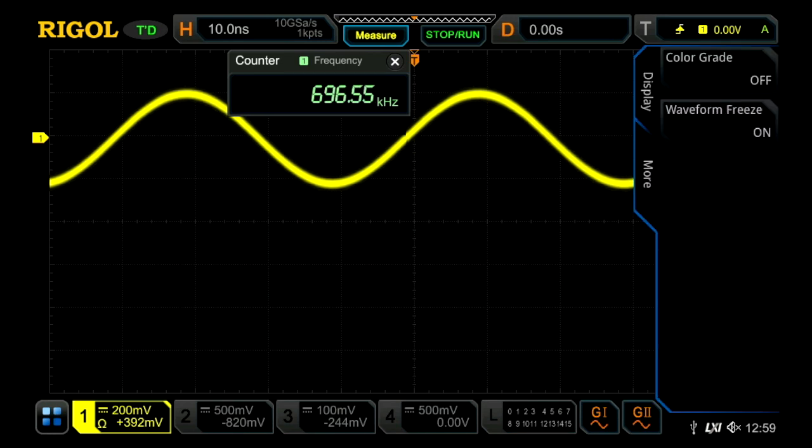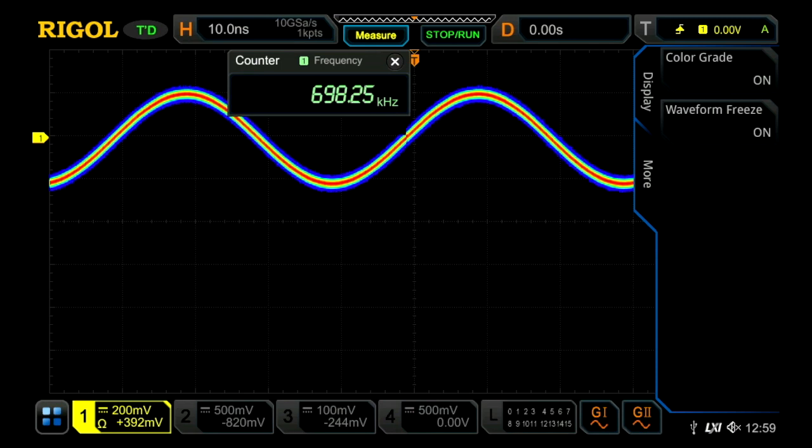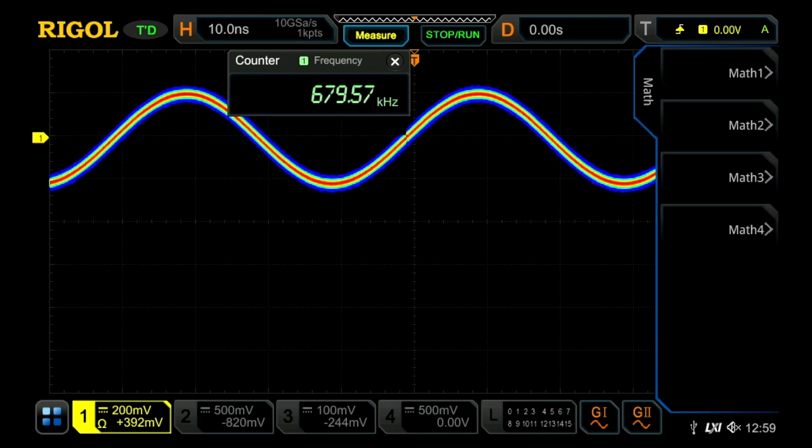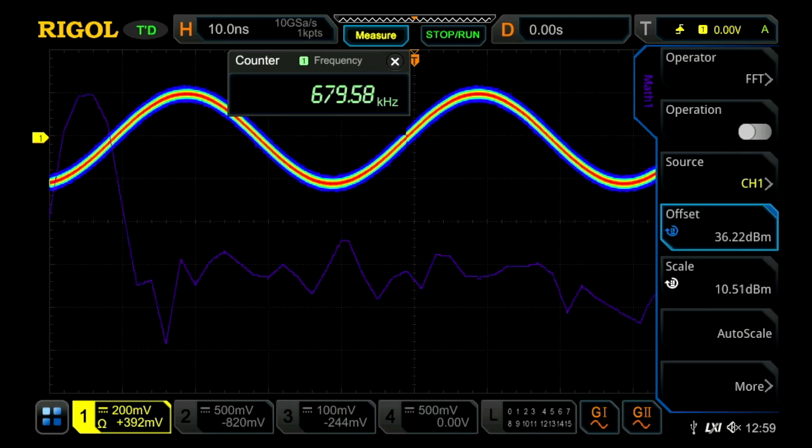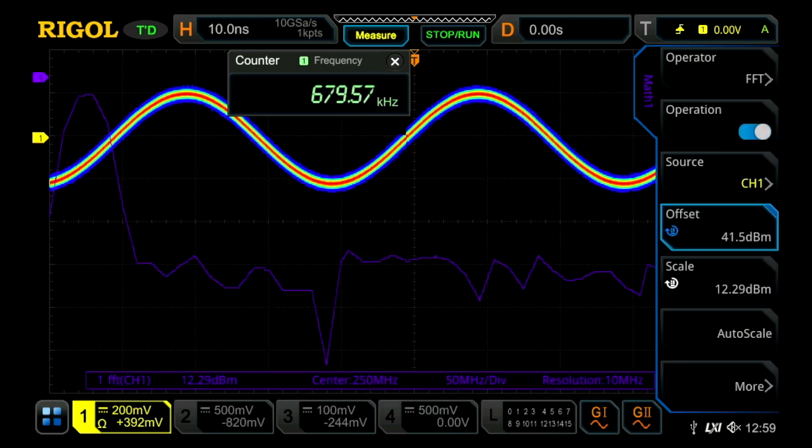Now the great thing about the 7000 is how many other things we can turn on and still accomplish a super high sample rate. So turn on a couple different things here. Now turn on the FFT. We've got the color grade on.